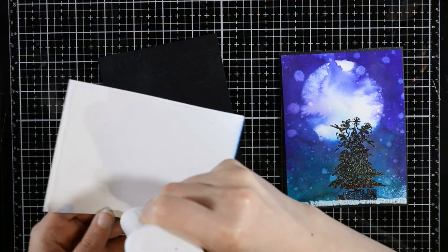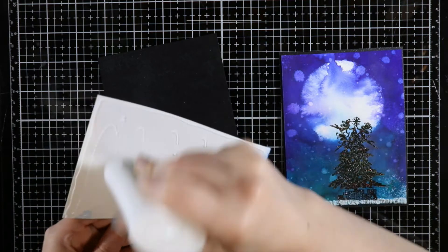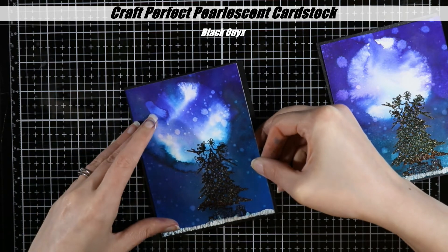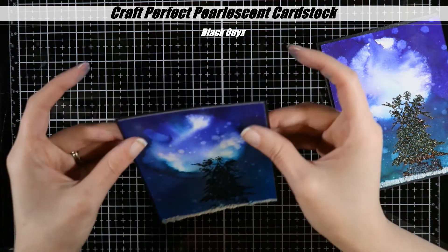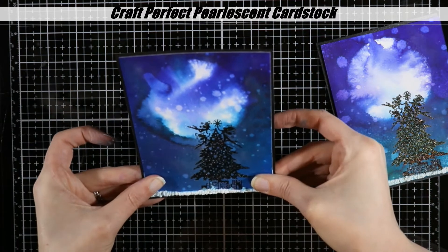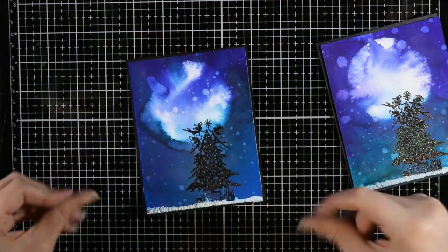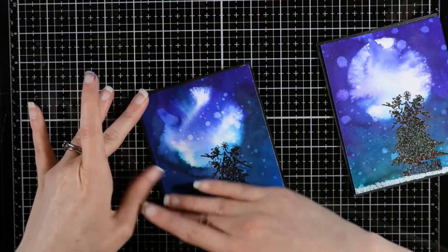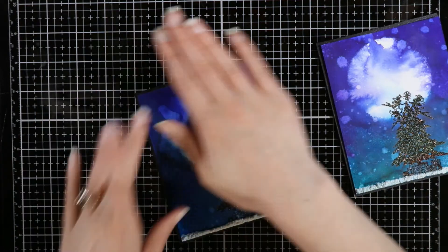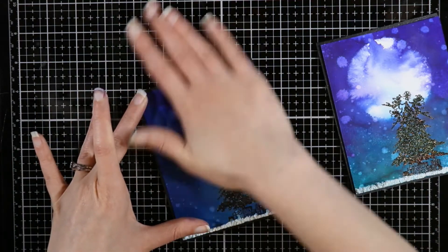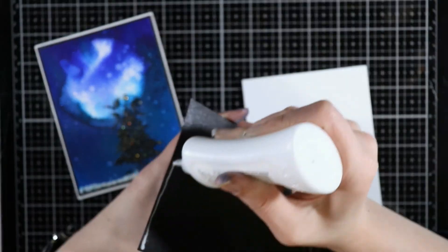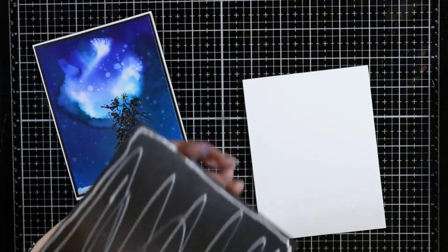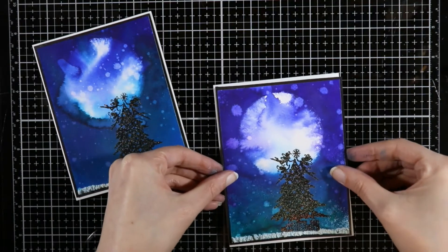I did mat this on some Craft Perfect pearlescent cardstock in black onyx, just to give it a nice border. The pearlescent cardstock is kind of sparkly and kind of matches the holographic embossing powder that I used. Then I will mount this on my 110 pound Neenah Classic Crest Solar White cardstock to finish it up. I will be putting Santa and his reindeer on the card popped up on some foam squares, and then that will finish off the card for today.